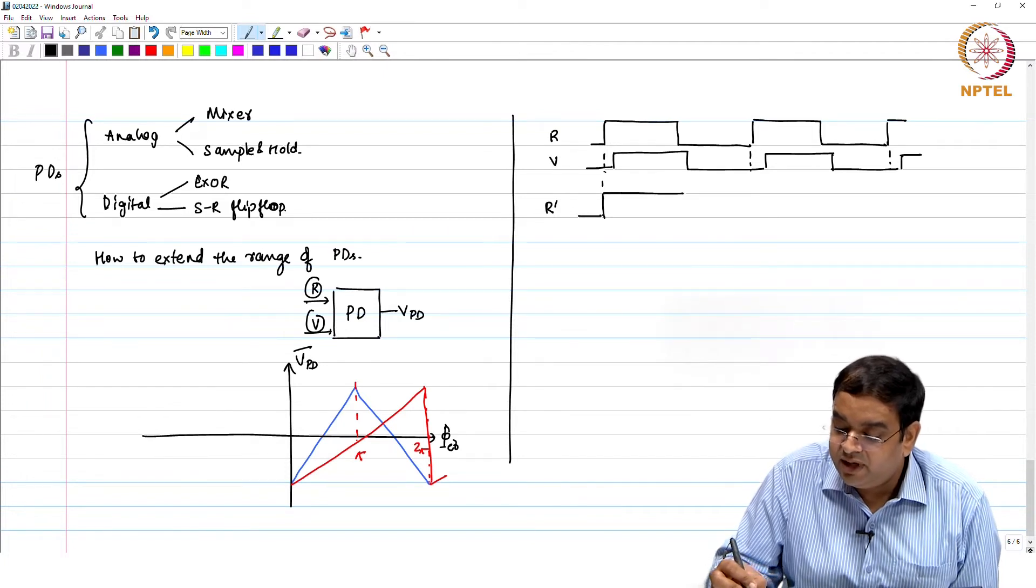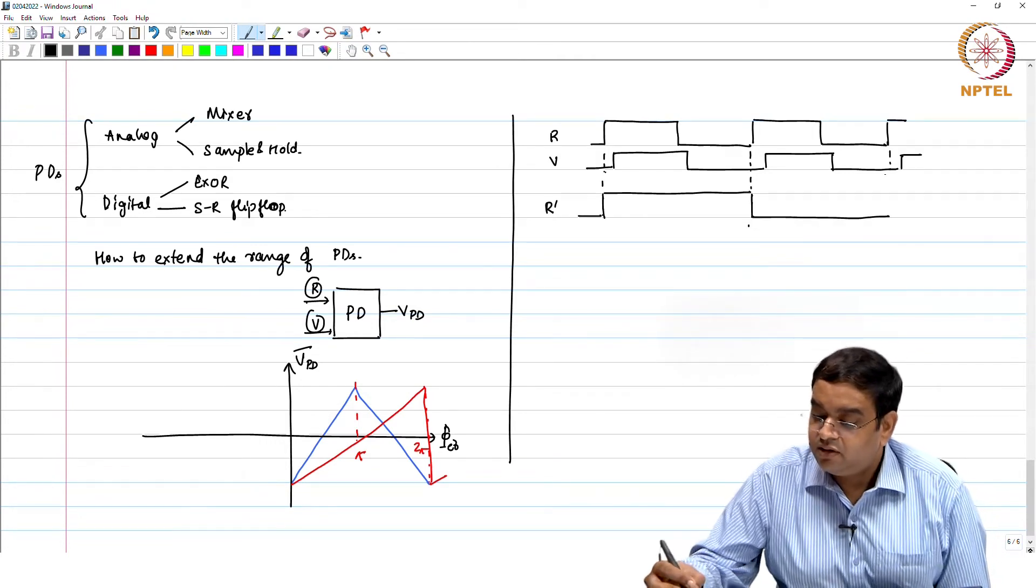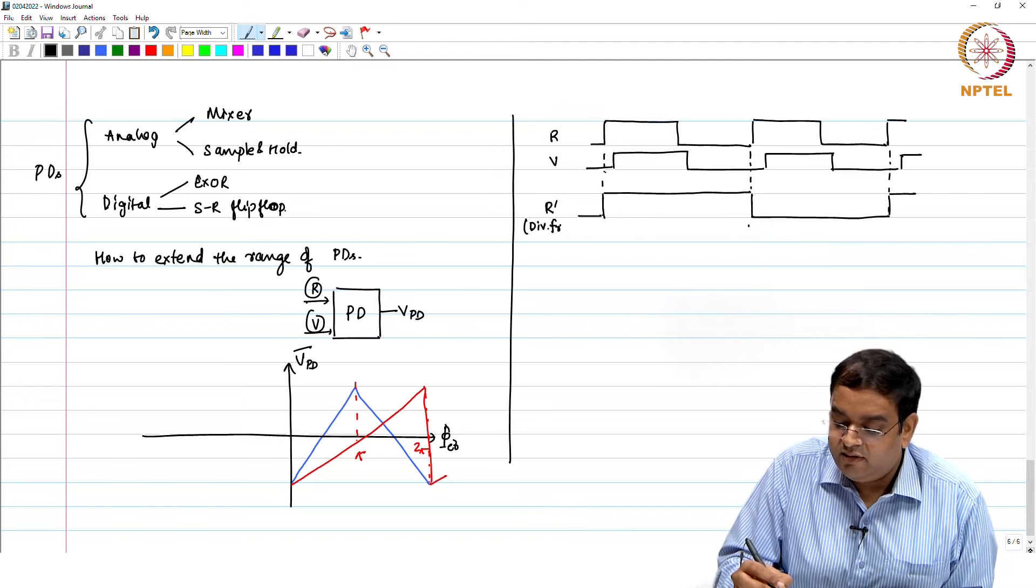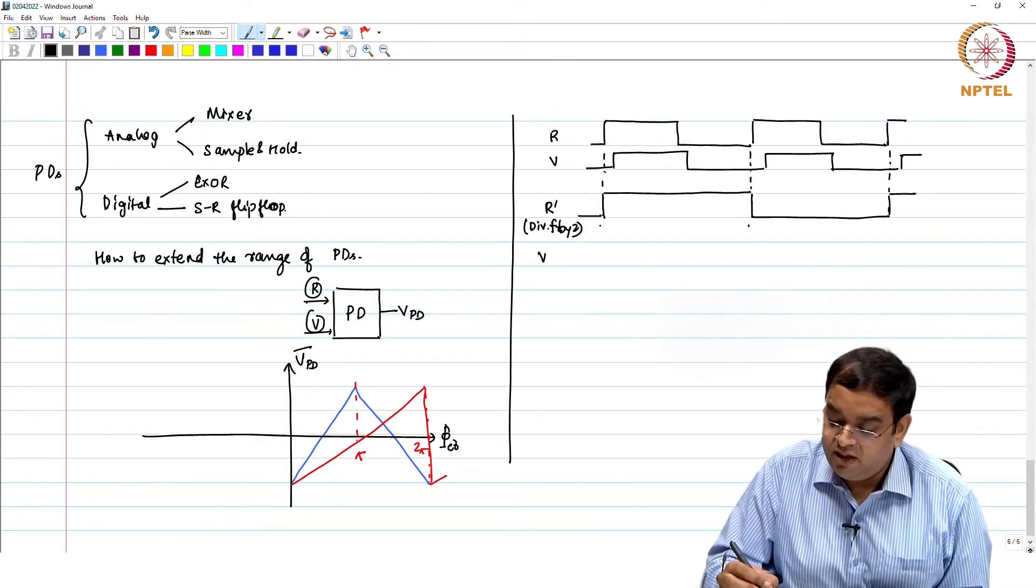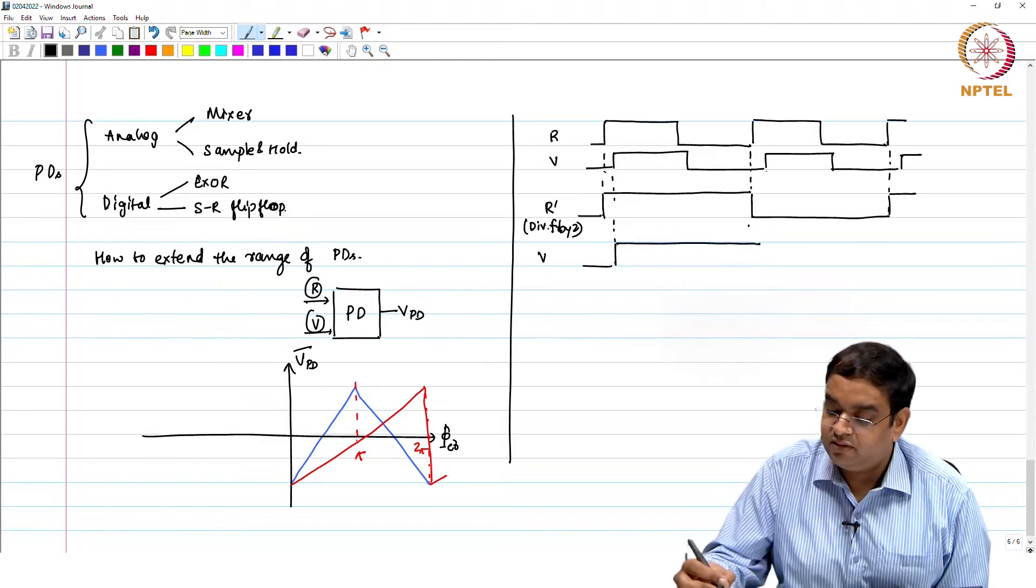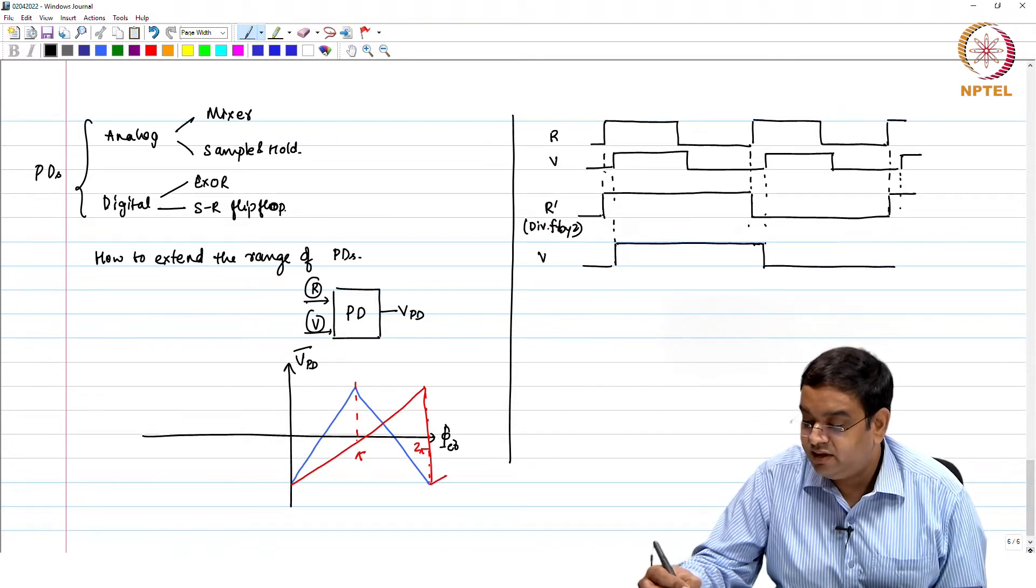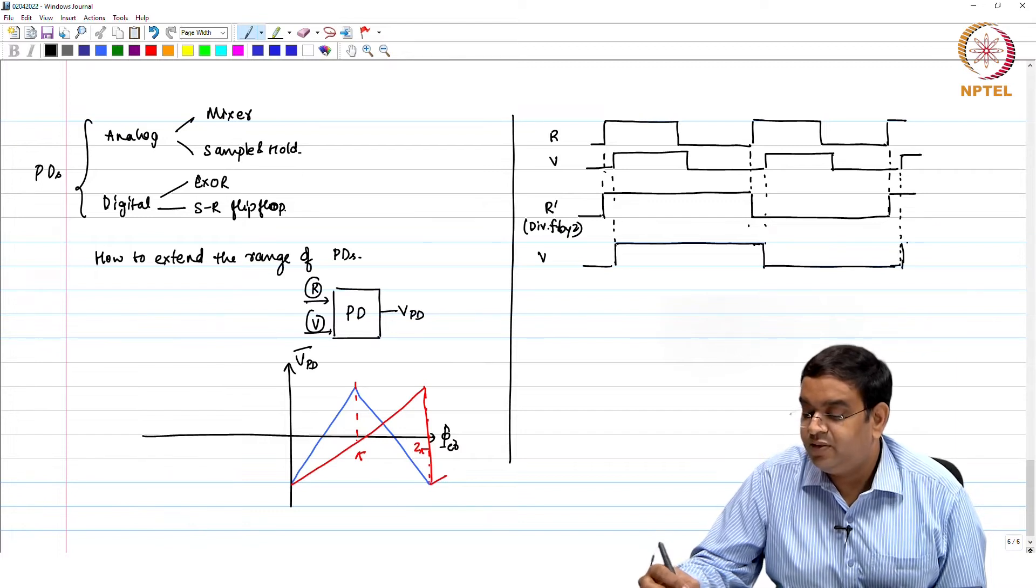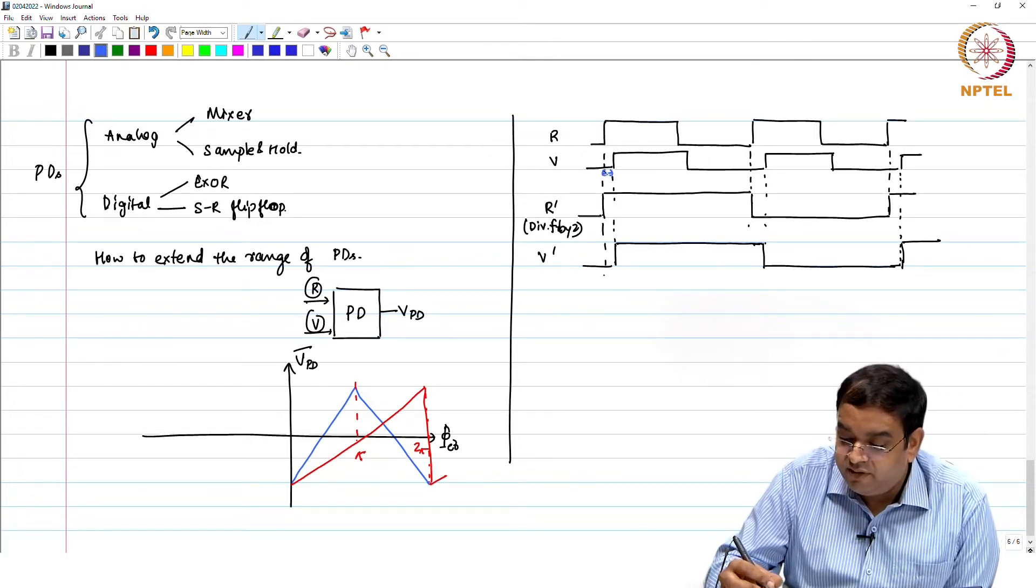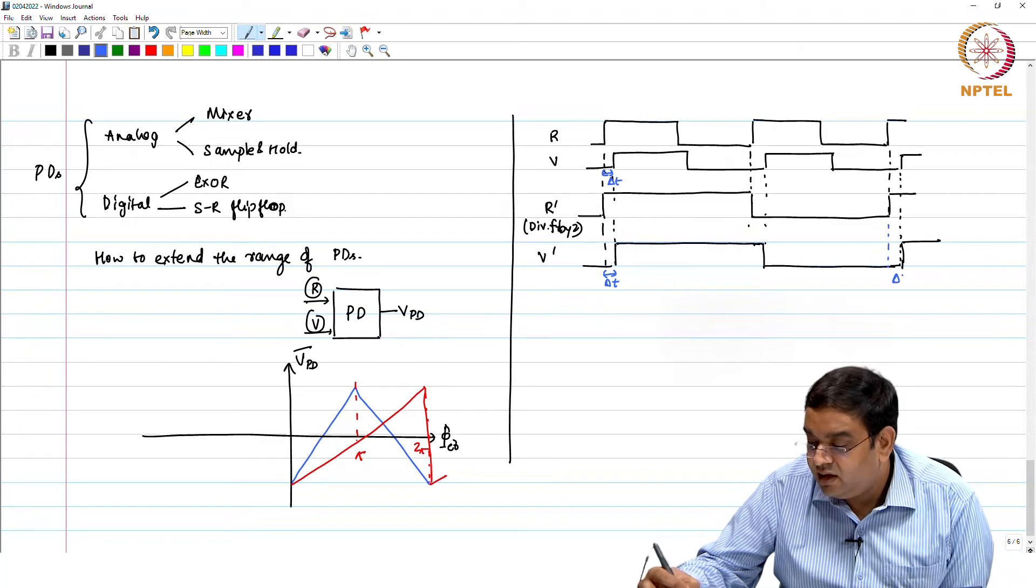So if I divide these frequencies and get outputs R dash and V dash, if I do that, what will happen here is this is our R dash. This is like dividing the frequency by dividing f by 2. Similarly, your V dash is going to look like this. This is dividing the clock by 2. In digital case you might have seen this operation quite often. This is V dash. So the phase error which you have between R and V, that phase error remains here. The only thing is it is measured now at half the rate.